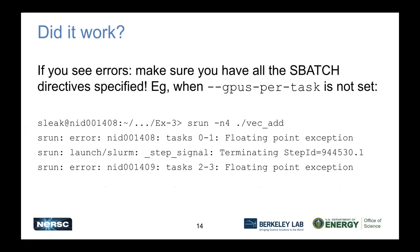What if it doesn't work? If you see errors, one thing to check is that you have all of the sbatch directives specified. An easy thing to omit is GPUs-per-task. What you can get then is actually a floating point error - not a segfault. The reason is that the GPU hasn't been allocated to the job and you're trying to run on a GPU that doesn't exist. So if you get an error, the first thing to check is that you have all the sbatch directives set.